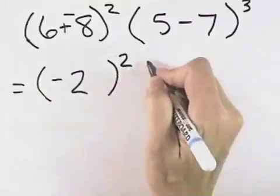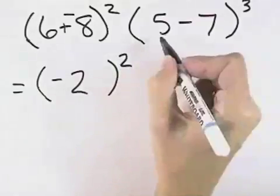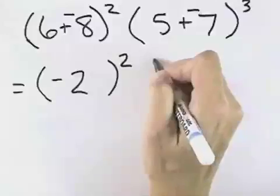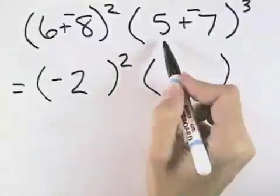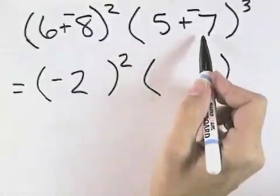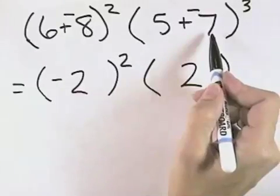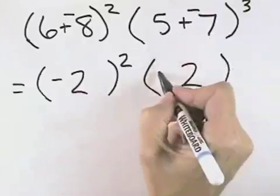And we'll leave the exponent until the next step. With the second parentheses, 5 minus 7 becomes 5 plus negative 7. And in this case, taking 5 and negative 7, they are opposite signs, so we take the difference, which is 2. The negative 7 has the larger absolute value, so we attach the negative sign here.